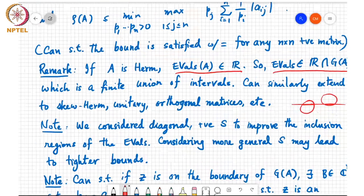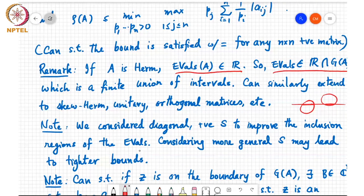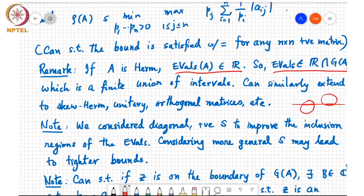We also looked at diagonal positive S to improve eigenvalue inclusion regions. It is possible to get tighter bounds by considering more general S, but we won't cover that in this course.